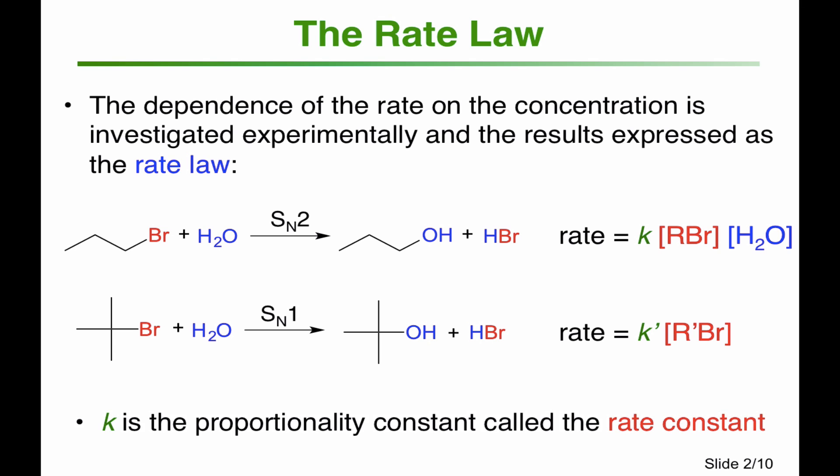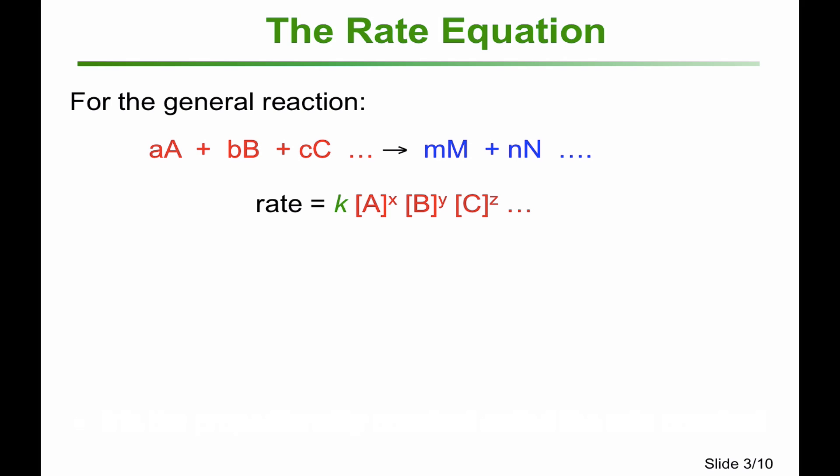K is the proportionality constant called the rate constant. For a general reaction A + B + C going to products, the rate is given by the rate constant times each concentration of the reactants raised to a certain power X, Y, or Z. We can only determine the form of the equation — the value of K, X, Y, and Z — by looking at experiments.